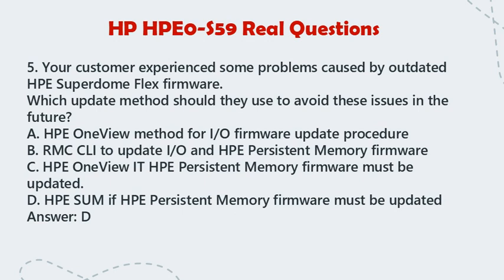Question 5: Your customer experienced some problems caused by outdated HPE Superdome Flex Firmware. Which update method should they use to avoid these issues in the future? a. HPE OneView method for I/O Firmware Update Procedure. b. RMCCLI to update I/O and HPE Persistent Memory Firmware. c. HPE OneView IT, if HPE Persistent Memory Firmware must be updated. d. HPE SUM if HPE Persistent Memory Firmware must be updated. Answer: d.